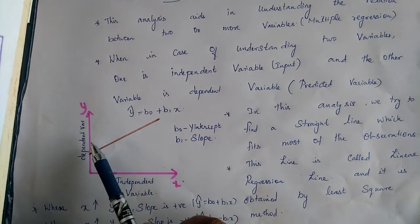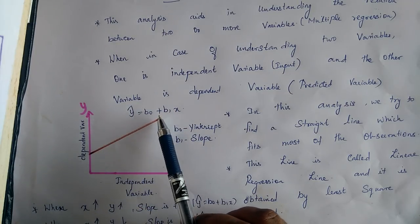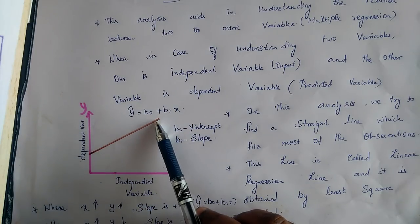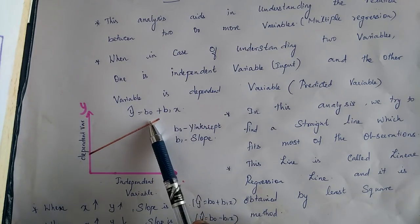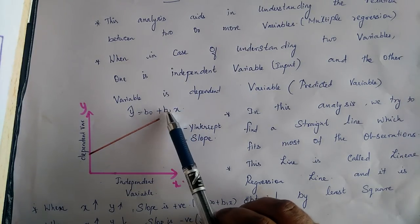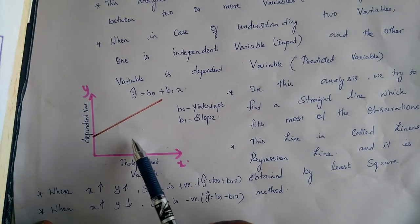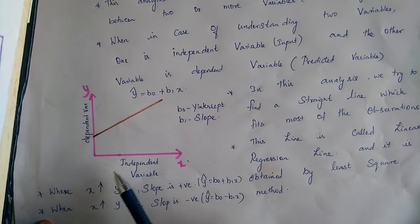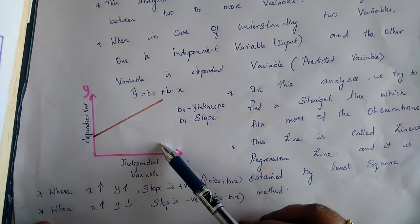That line is represented by the equation: y-hat equals b0 plus b1 times x. Here b0 is the y-intercept and b1 is the slope. b1 is positive when x increases and y increases. There can also be scenarios when x increases and y decreases, giving a negative slope — the line would slope downward.